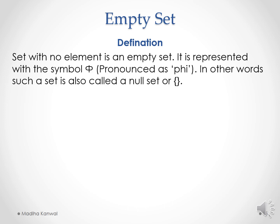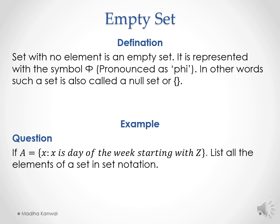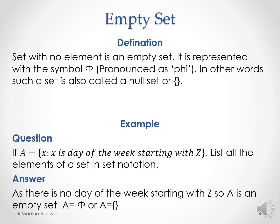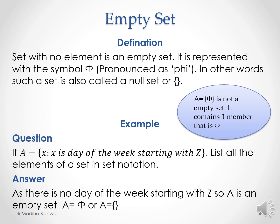Empty set definition: a set with no elements is an empty set. It is represented with the symbol φ (phi) and is also called a null set. For example, if A = {x | x is a day of the week starting with Z}, then its answer is an empty set because no day of the week starts with Z. So A = φ or A is a null set. Note: if φ is written inside brackets, it is not an empty set — it contains one member, which is φ itself.